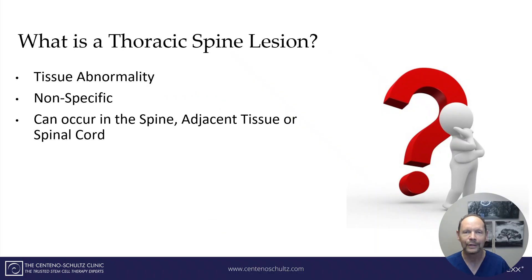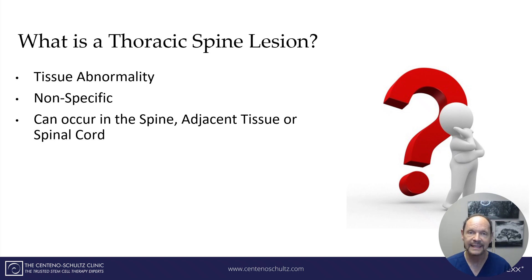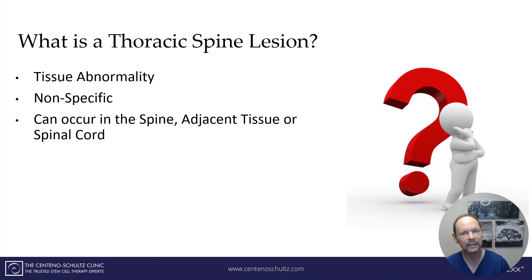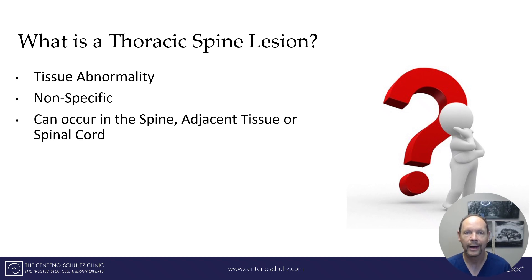What is a thoracic lesion? Well, it's a tissue abnormality. It's a nonspecific finding that's often reported in a CT or MRI. You may even see it in an x-ray report and it can occur in different parts of the spine. It can include the spine itself, adjacent tissue, and the spinal cord. I'm going to go through some examples for you.